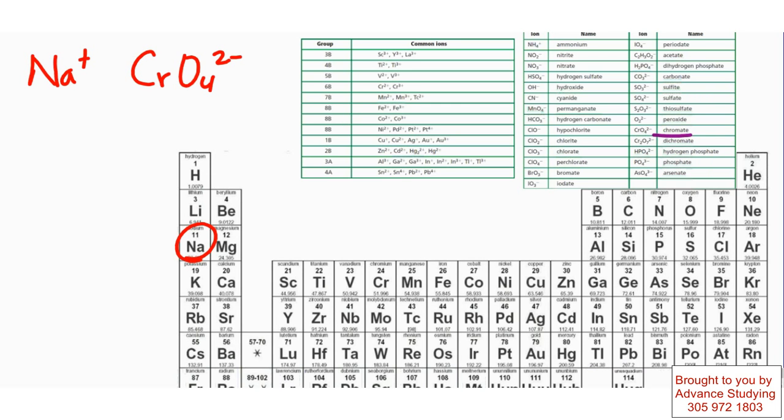When I name this compound, naming it is simple. It's just sodium. And sodium only has one charge, so I don't have to say which sodium it is. It's only one sodium. Sodium chromate. That's the name of the compound between sodium and chromate.